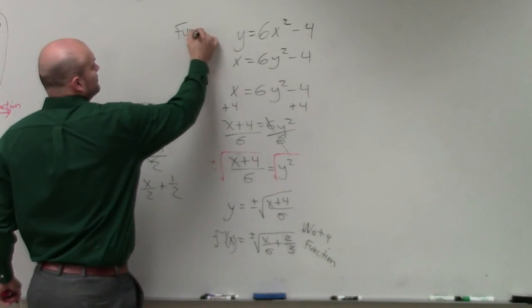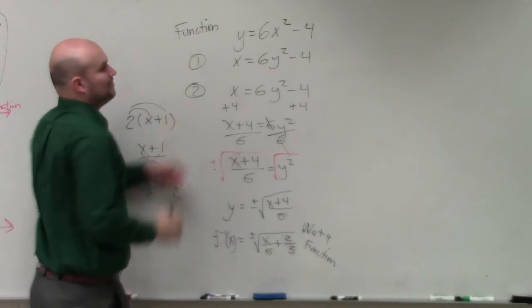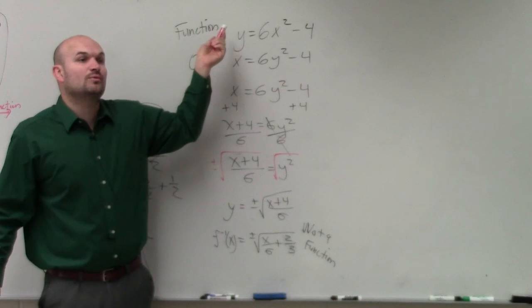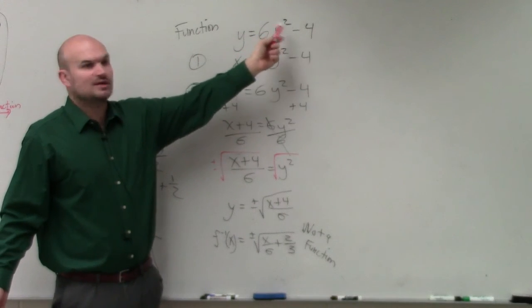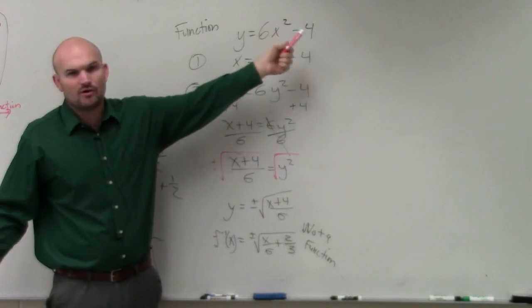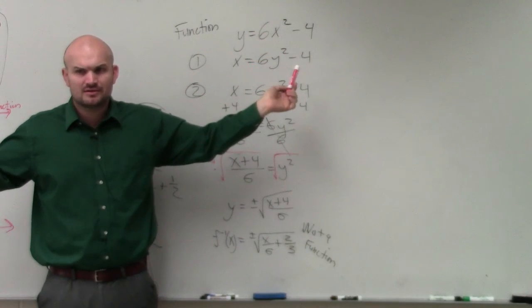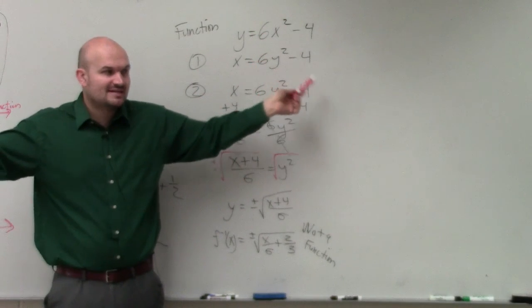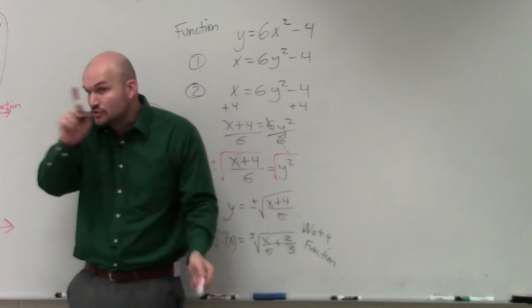This is a function. Because when I plug in an x value, do I get uniquely one y value out? Again, let's plug 0. 0 squared is 0, 0 times 6 is 0, negative 4. Is there any way for me to get another number? No, it's negative 4, right? When x equals 0, y equals negative 4. There's only one answer.